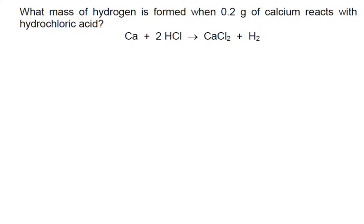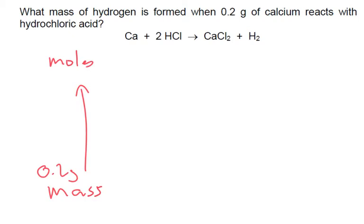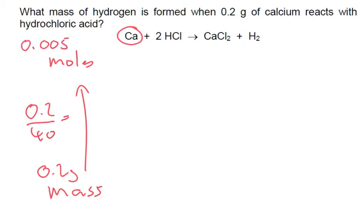What mass of hydrogen is formed when 0.2 grams of calcium reacts with hydrochloric acid? So we've got our mass: 0.2 grams. We want to go to moles. Looking at calcium — its atomic mass on the periodic table is 40 — so 0.2 divided by 40 gives us 0.005 moles.